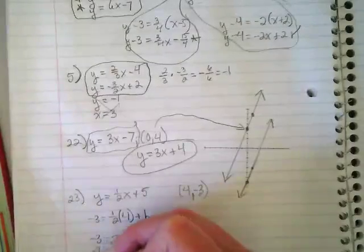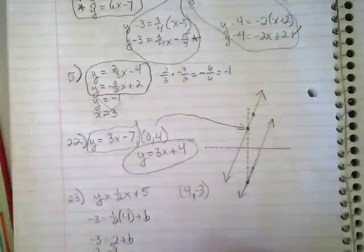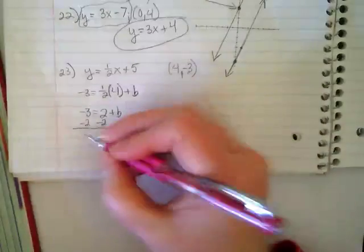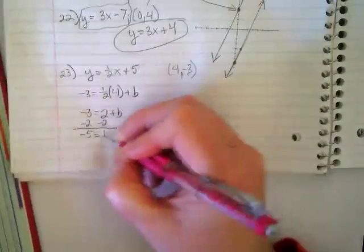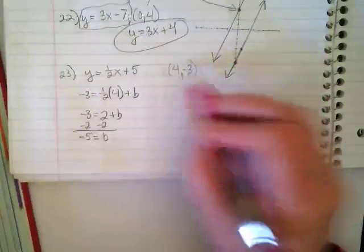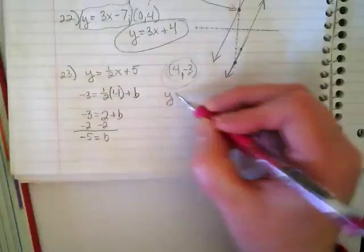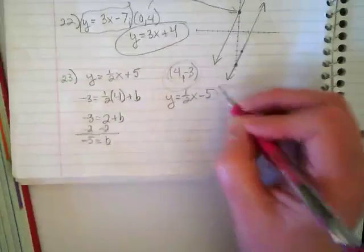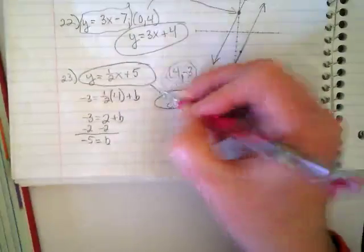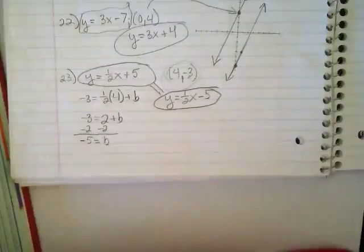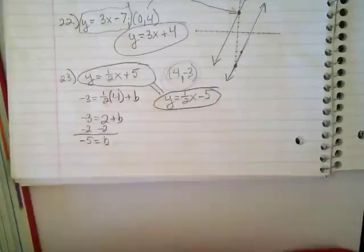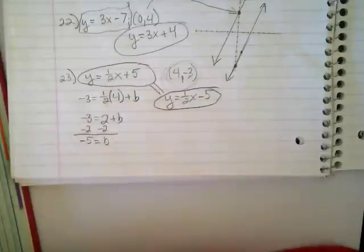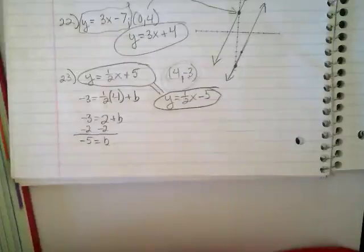If I simplify that, I'm going to find the b. What's 1 half times 4? So negative 3 equals 2 plus b. Negative 3 and negative 2 is negative 5. Negative 5 equals b. So my matching equation for this point is going to be y equals 1 half x minus 5. These two are parallel to each other.